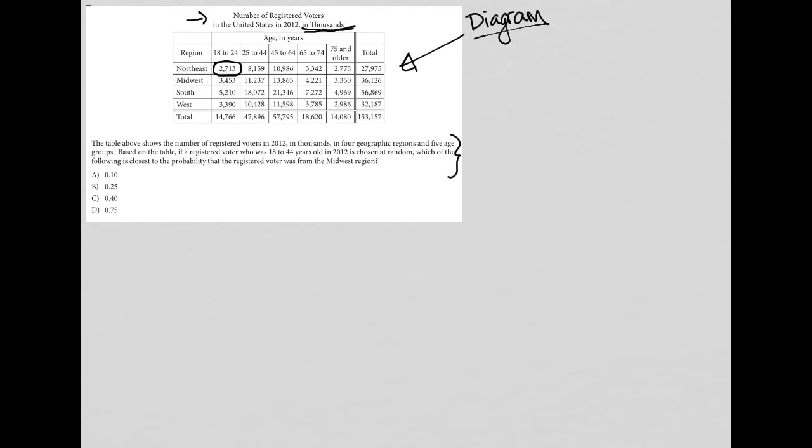So what do we have? Registered voters. I have different regions: northeast, midwest, south and west. Then I have different age ranges, 18 to 24, 25 to 44, so on and so forth. We can read all that. And then I have totals here and totals here as well. So now I'm going to read the question.